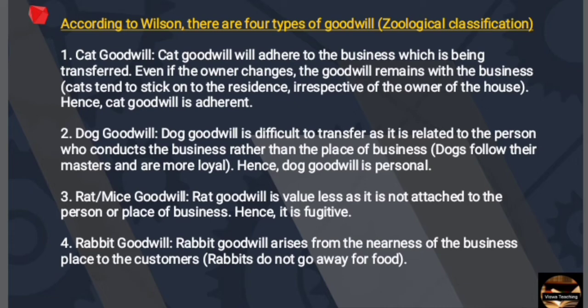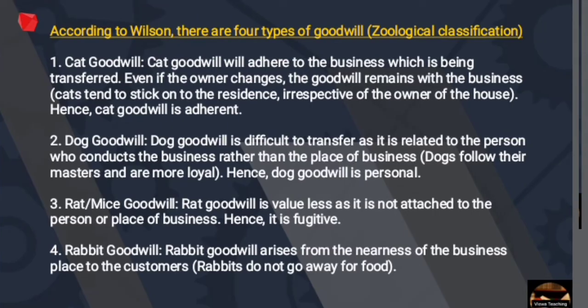Rabbit Goodwill arises from the nearness of the business place to the customers. It depends on how close the business is to its customers. Customers come to buy from nearby places. These are the four types of goodwill: Cat, Dog, Rat or Mice, and Rabbit.